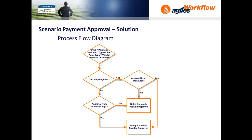The Process Flow Diagram: if a payment journal is entered for more than $1,000, the first check is whether it is a currency payment. If it is a currency payment, it is directed to the Treasurer for approval. If it isn't a currency payment — it is a local payment — then it is directed to the Account Manager for approval.